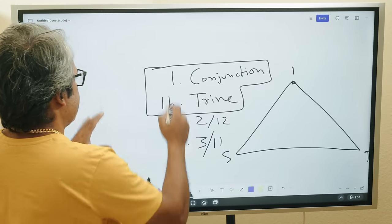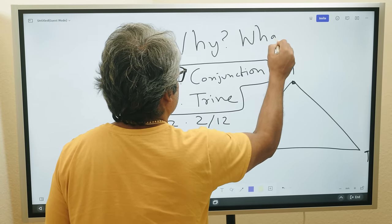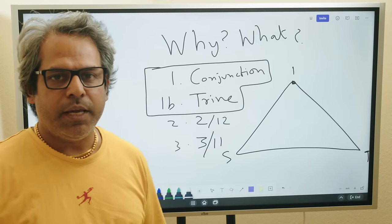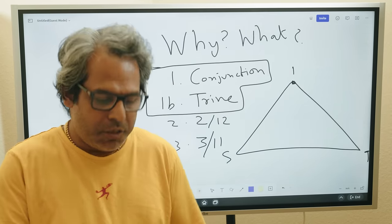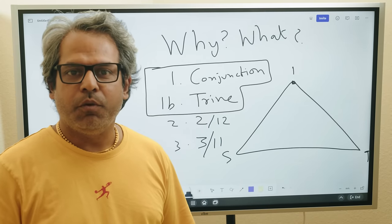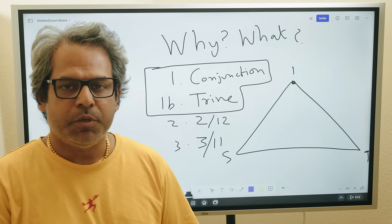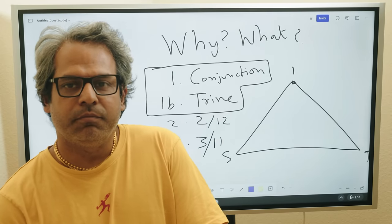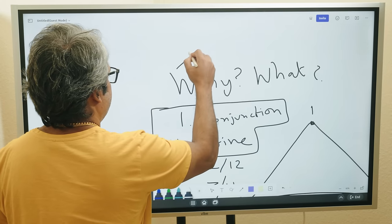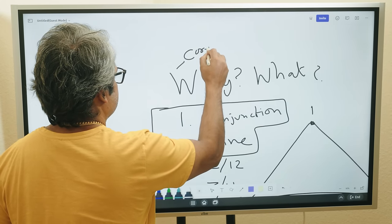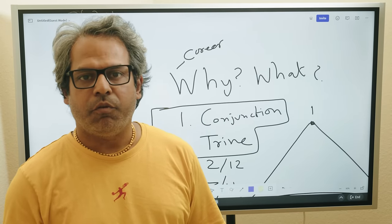The first question that you want to ask is why and what. Why am I looking at this combination and what am I looking at? You can't just make a combination and just say something. Why is what is the purpose of making this combination? The purpose could be, let's say, career.